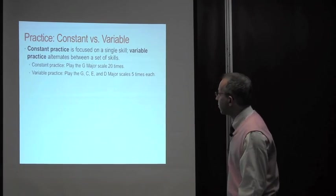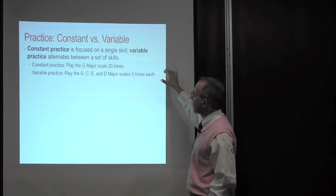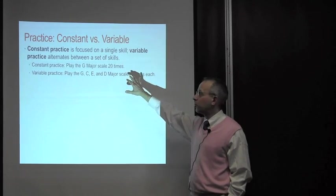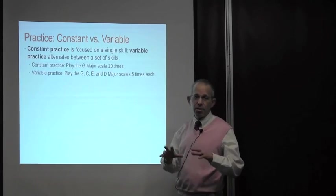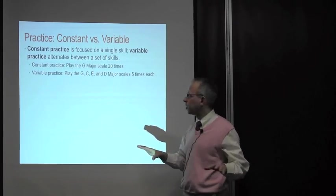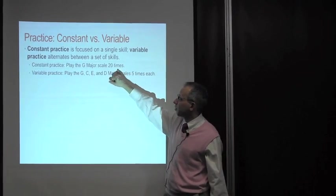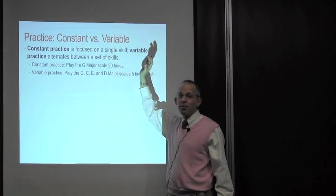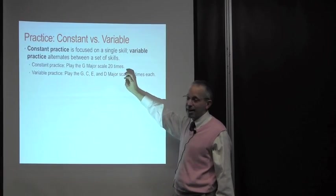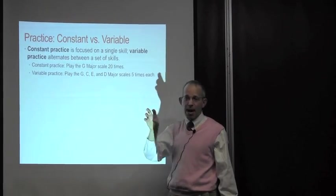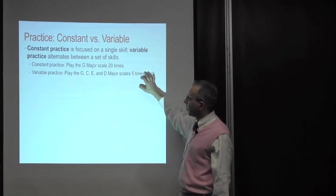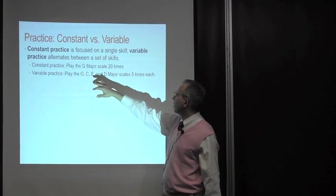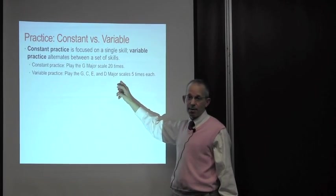Constant versus variable practice. Constant practice is a single skill. Variable practice alternates. The same basic principle of things being distributed. Constant practice would be to play the G major scale 20 times and then move on to the next. It's really the same as massed versus spaced, but massed in terms of what you're actually practicing. Variable is to play each of these different scales five times.